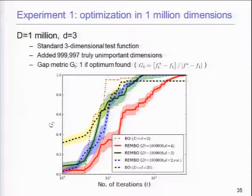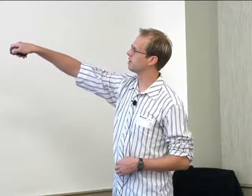First experiment: optimization in a million-dimensional space, where we have a three-dimensional function embedded in a million dimensions with 999,000 truly unimportant dimensions added. We plot a gap metric where 1 means the optimum is found. Standard BO variants with the random embedding all achieve the optimum pretty quickly and are more or less indistinguishable. Whereas Bayesian optimization in even a 20-dimensional space just stagnates — it can't move toward the optimum anymore.